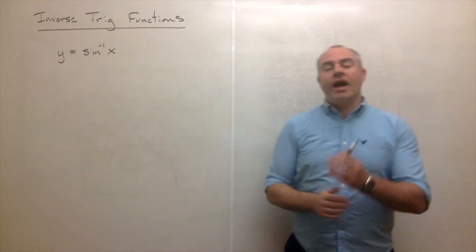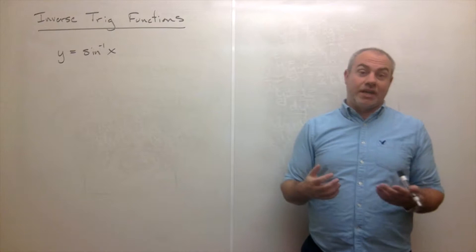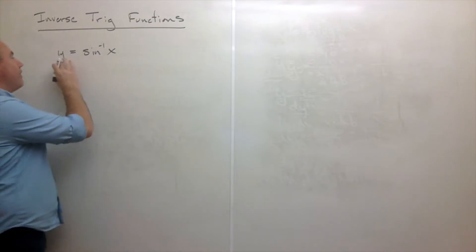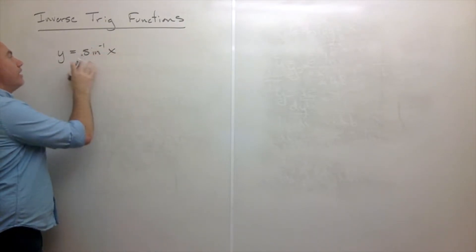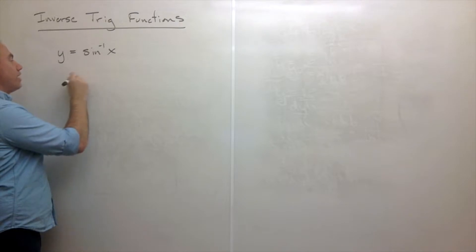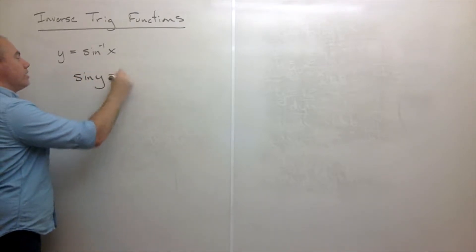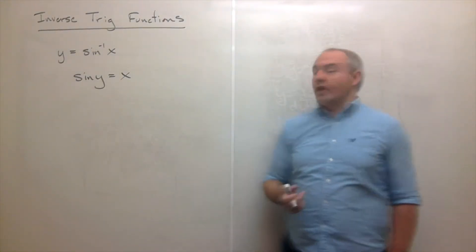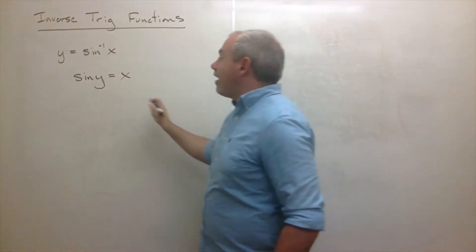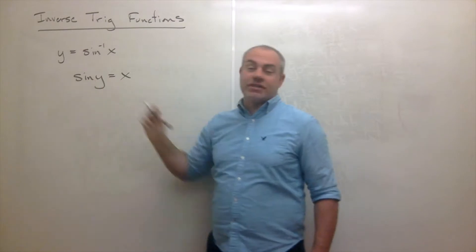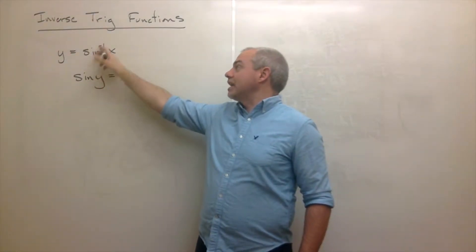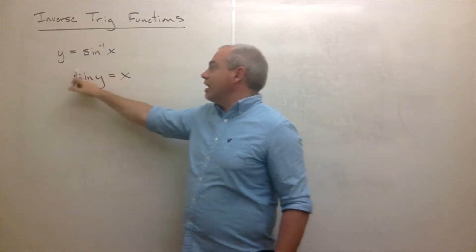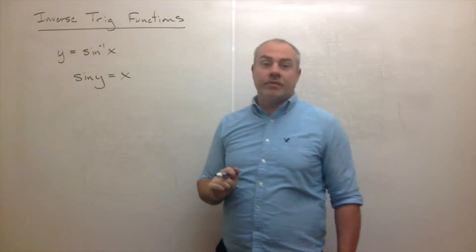So how do I take the derivative of the inverse sine of x? First, I'm going to rewrite this function. If y equals sine inverse of x, and I take the sine of both sides of the equation, I get that sine of y equals x. That's an equivalent statement. Now I do know how to take the derivative of sine of something, so I'm going to use implicit differentiation.